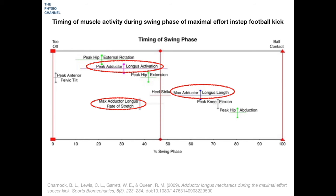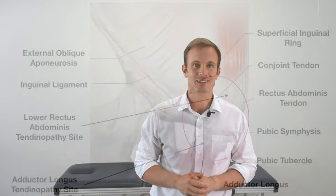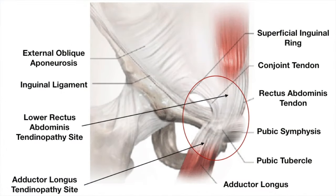This graph shows the muscle activation and stretch occurring in the adductor longus muscle during maximum effort soccer kicking. The peak adductor force occurs in the first half of the swing phase, and then in the second half of the swing phase before ball contact, the adductor reaches its maximal length. This brings us to the end of the adductor tendinopathy anatomy lecture.